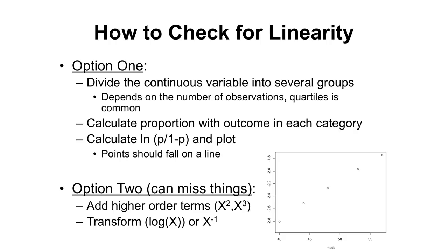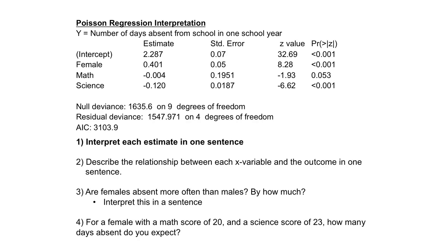Now let's turn to Poisson regression. We're modeling the number of days absent from school in one year. This dataset collected the number of days each child was absent in one school year, so it's count data. We don't need to use an offset because everyone is followed for the same period of time — essentially, we're looking at the rate per school year modeled as a count. There's no need to account for differences in follow-up time. The coefficients can be interpreted as either the change in the log count of absences in one year, or the change in the log rate of absences per school year.